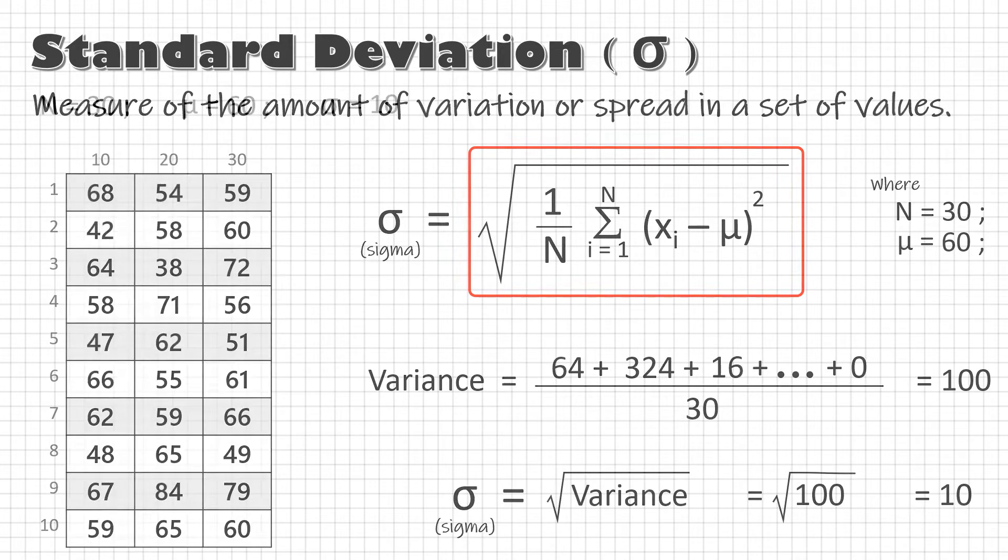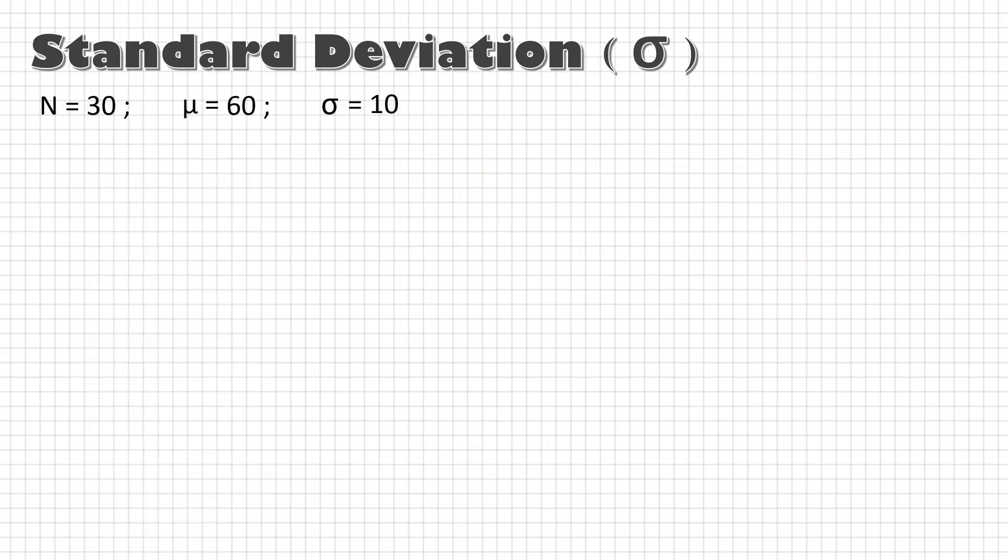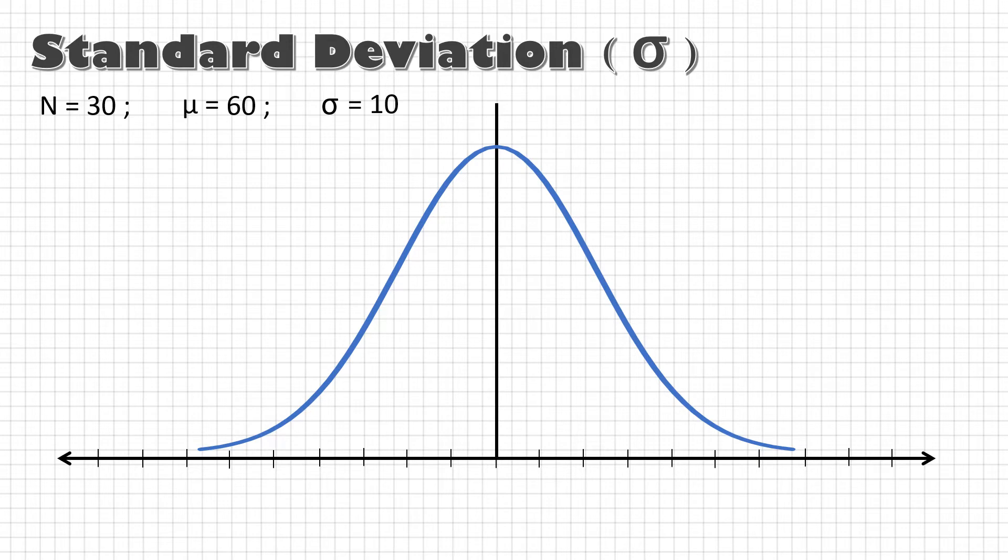Now comes the interesting part. We have seen that curve represents a process. Let's add some numbers to it. Mean represents center of the curve. That is, my process is set at 60 mm and it is making parts within this range due to its natural variation.